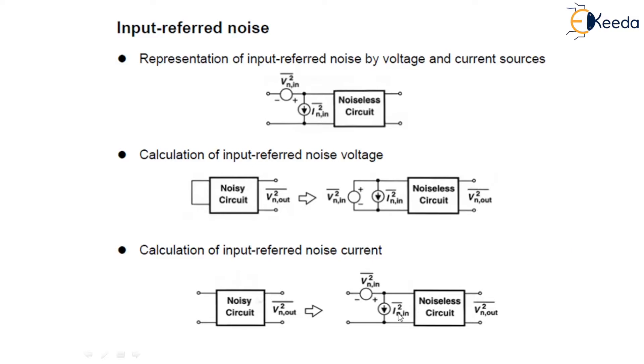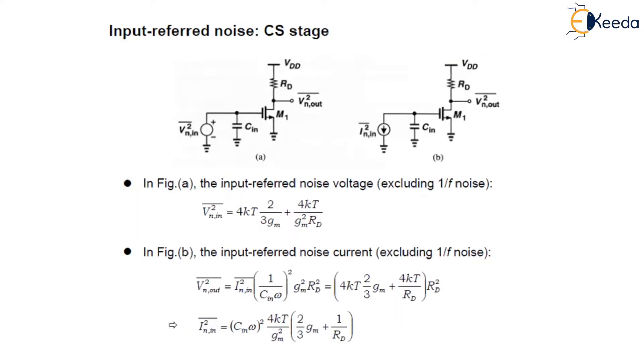So this is the calculation of the input-referred noise via voltage and current. In the case of a common source stage, we are calculating the input-referred noise voltage and current of the figure below.